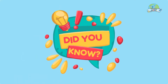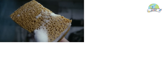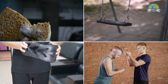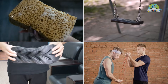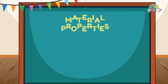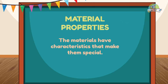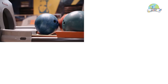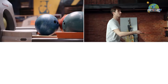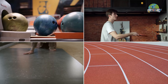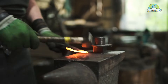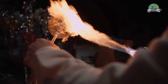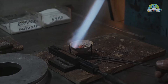Did you know that materials can be soft, hard, flexible, or even elastic? Let's find out more about their interesting properties. The materials have characteristics that make them special. Some are heavy, some are light, some are smooth, and some are rough. These characteristics make the material behave in a certain way when faced with external stimuli such as light, heat, and forces, among others.